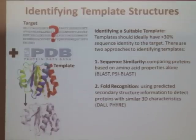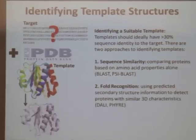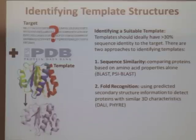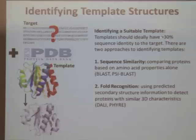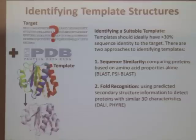A big part of comparative modeling is identifying what your template structure is going to be. I'm not going to go into great detail about this — the philosophy of how to determine good templates is outside the scope of this workshop and outside of Rosetta itself. You should come to Rosetta with a template in mind. A suitable template should have at least 30% sequence identity ideally to the target, especially in the backbone regions. The loops can have a lot of variability.